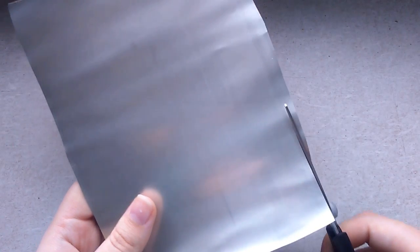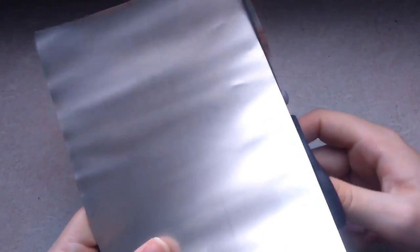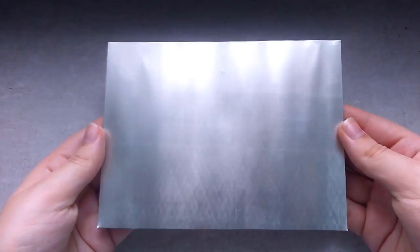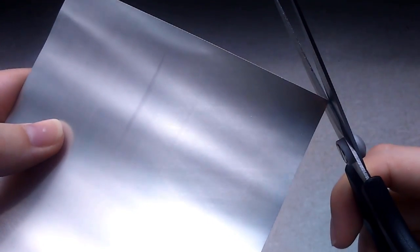Next cut the sheet into an even rectangle. I'm just eyeballing it, but you can draw lines on the back of the sheet with a permanent marker as well. The corners are quite pointy, so I recommend to round them off with your scissors.